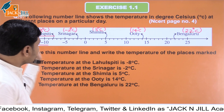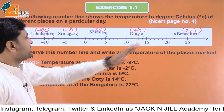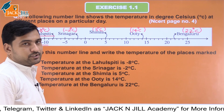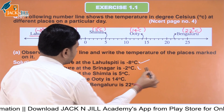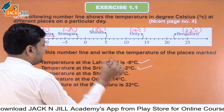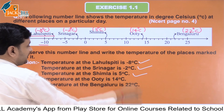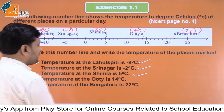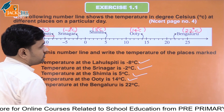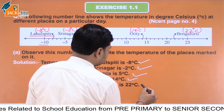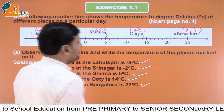Reading the temperatures from the number line: Leh is minus 8 degree Celsius, Srinagar is minus 2, Simla is 5 degrees Celsius, Ooty is 14 degrees Celsius, and Bangalore is 22 degrees Celsius.